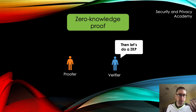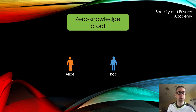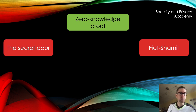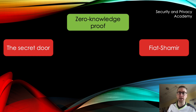In order to make this video a bit more understandable, I use the established names Alice and Bob for the prover and the verifier respectively. We will discuss two concepts today: the first one is called the secret door or magic door, and the other one is the Fiat-Shamir heuristic, which I will explain in a simplified manner but mathematically still sound.